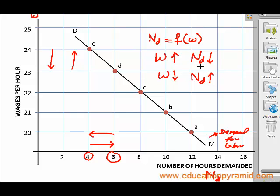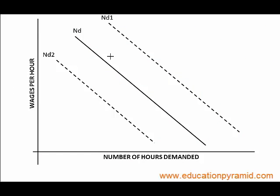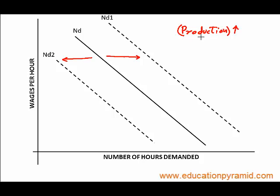When two variables move in opposite directions, we call it a negative slope. Certain factors shift the whole demand for labour curve towards the right or left. For example, production: if there is an increase in production — meaning more goods and services are required — more goods will be produced and demand for labour will shift towards the right. When there is a decrease in production, the demand for labour curve will shift towards the left.